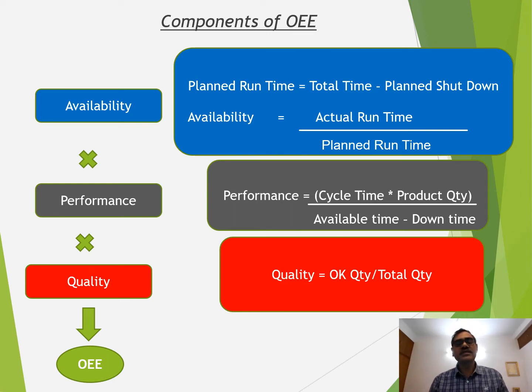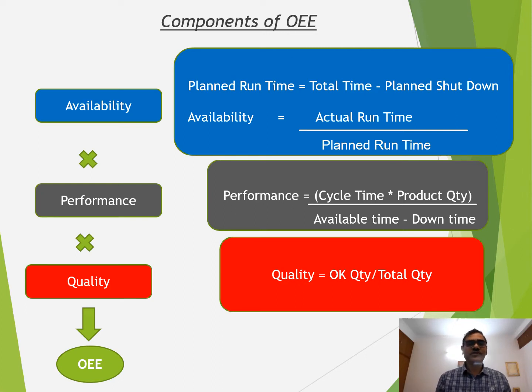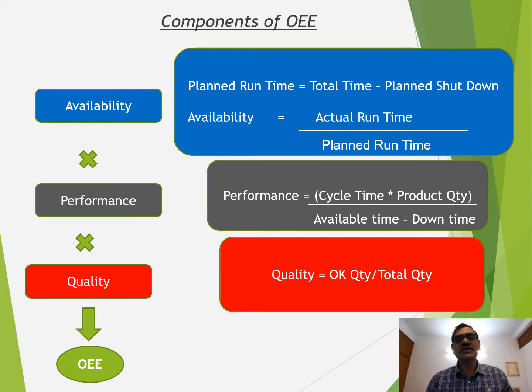And the third component is Quality — the okay quantity divided by the total quantity. Okay quantity is total quantity minus the reject quantity. So this component captures the rejection.